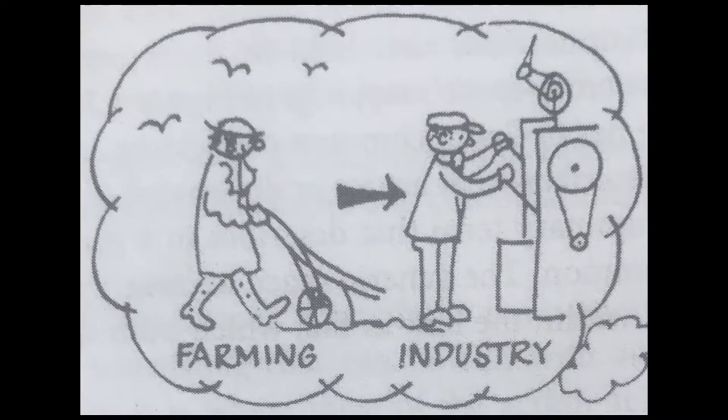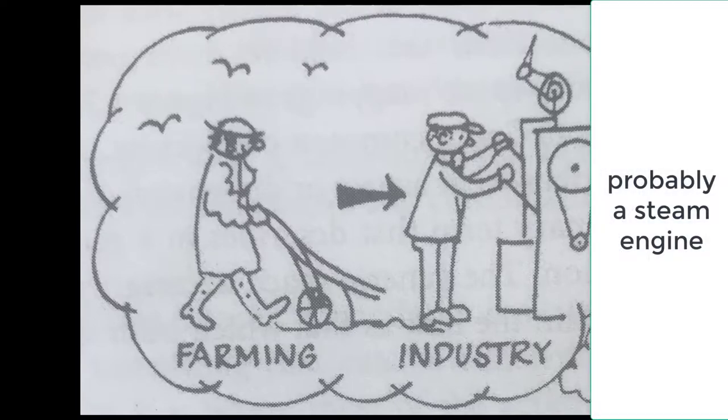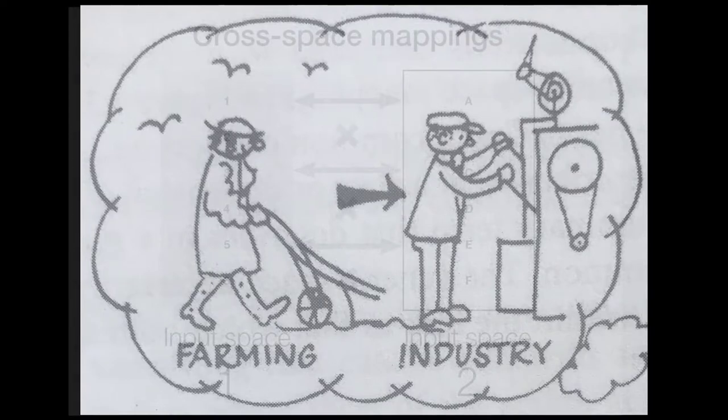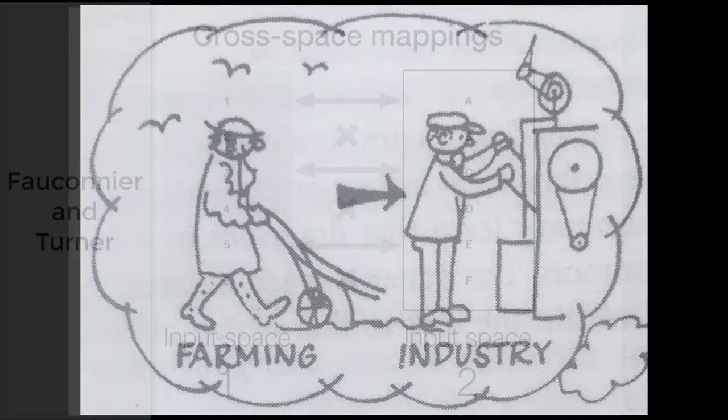We can take a look at the first picture. There you have a farmer happily plowing away, and right next to him you can see an arrow pointing to a guy who's working on a machine in a factory. When I started to take a look at it, I started to use this conceptual integration tool quite systematically because I'd read about it from guys called Faulkner and Turner.